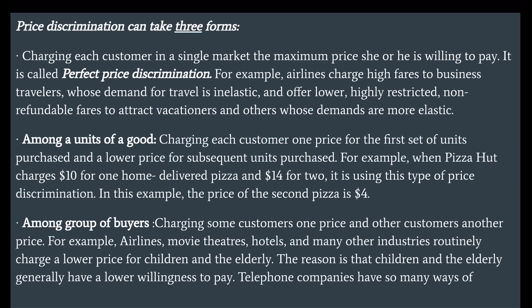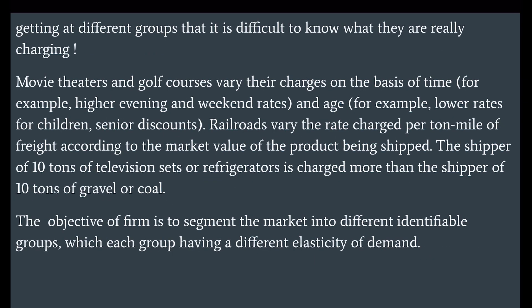Third, charging some customers one price and other customers another price. For example, airlines, movie theaters, hotels, and many other industries routinely charge lower prices for children and the elderly, because they generally have a lower willingness to pay. Movie theaters and golf courses vary their charges based on time — for example, higher evening and weekend rates — and age, such as lower rates for children and senior discounts. The objective is to segment the market into different identifiable groups, each with a different elasticity of demand.